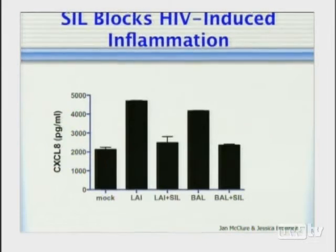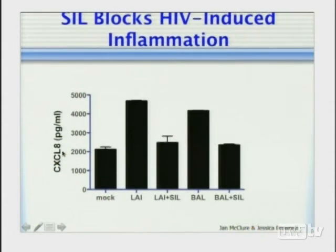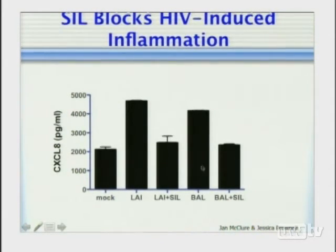Multiple types of HIV appear to be inhibited by Silibinin. We also studied virus-induced inflammation: Jessica Brownell and Jan measured production of pro-inflammatory chemokine CXCL8 (interleukin-8) following LAI and BAL infection. As expected, this chemokine was strongly induced by both viruses. Silibinin treatment not only suppressed virus but also suppressed the virus-induced inflammatory response.